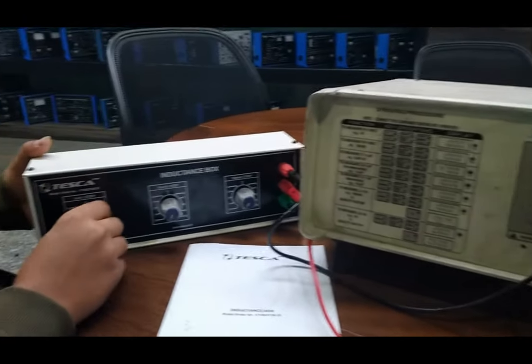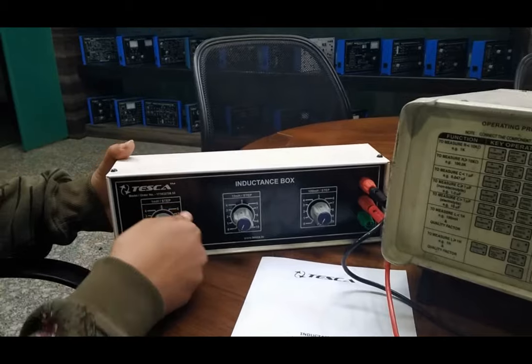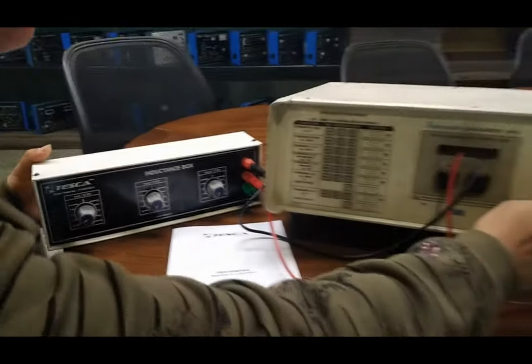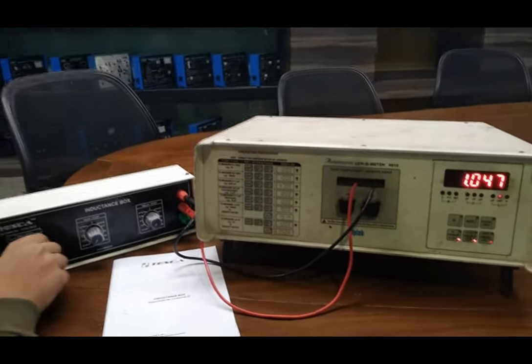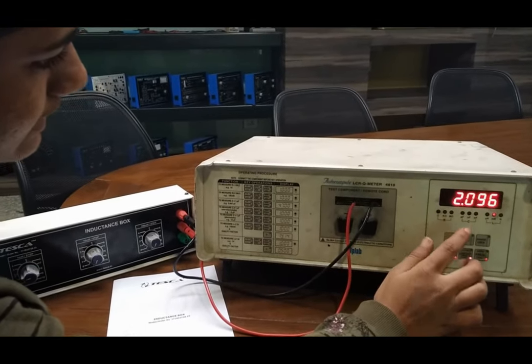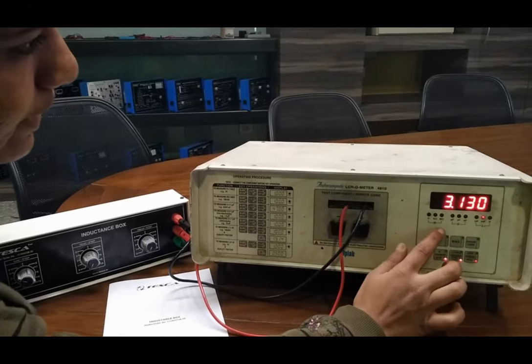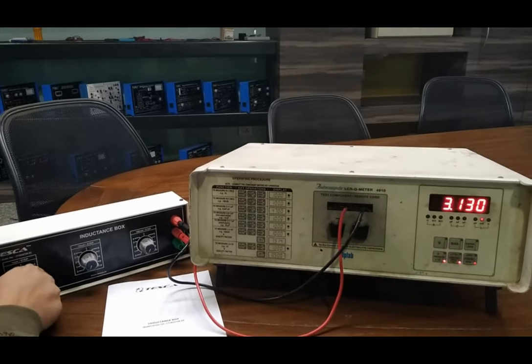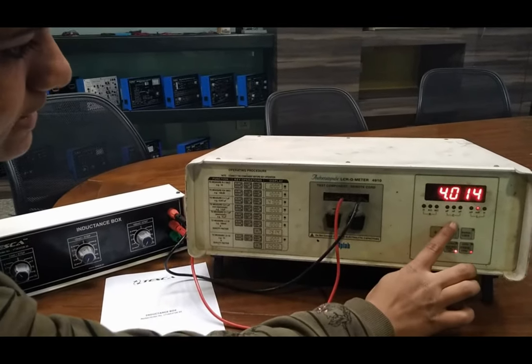Now turning on the kit with 1 mH value, it is showing 1.047. With 2 mH, it is showing 2.096. 3 mH, 3.13. 4 mH, 4.014.